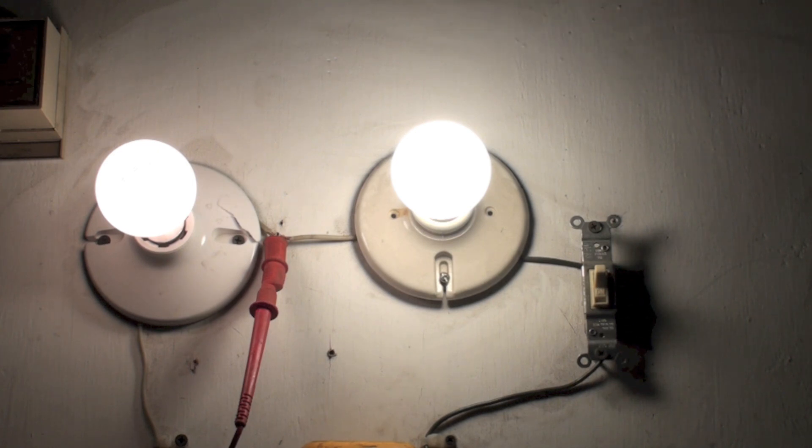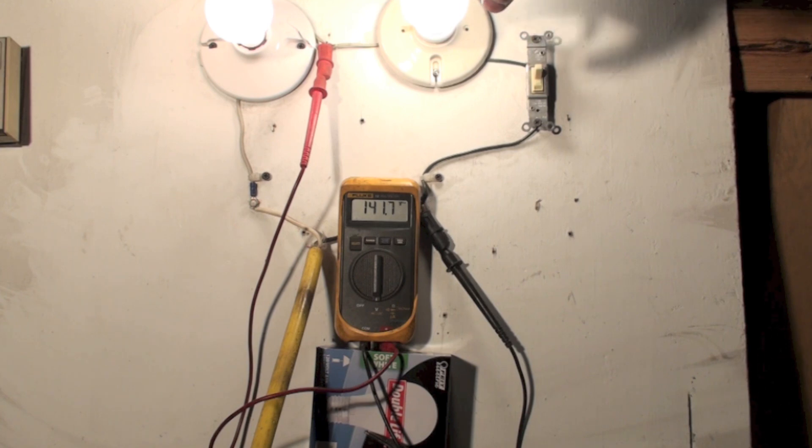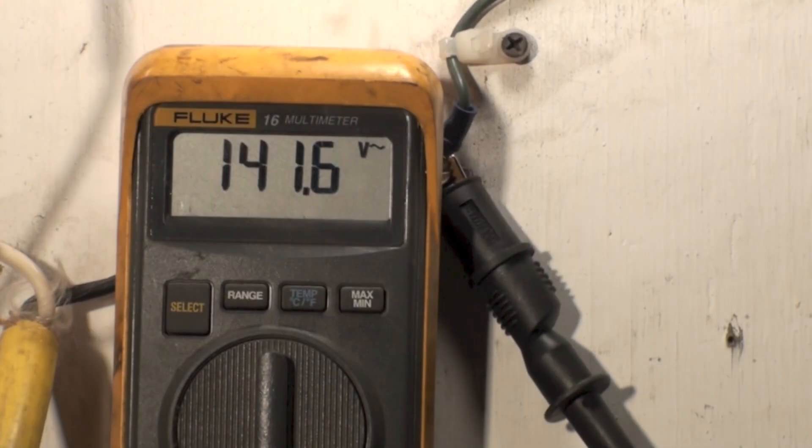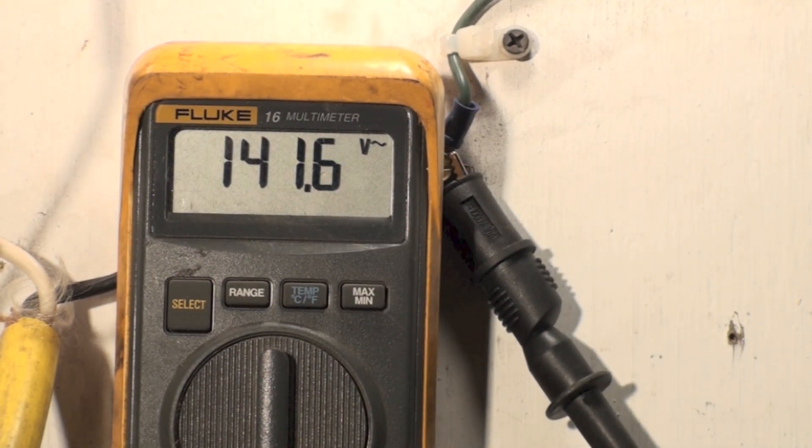Again, I have my probes on this 60 watt light bulb. Let's look at the voltage. I've got 141 volts. Now that's a 120 volt light bulb, but I got 141 volts.